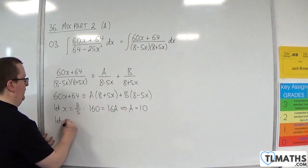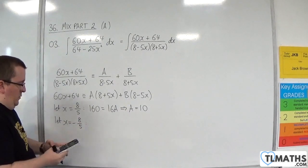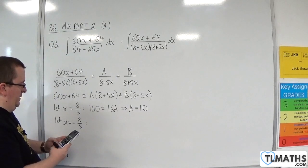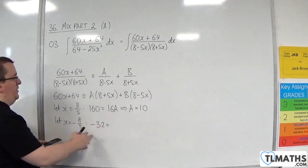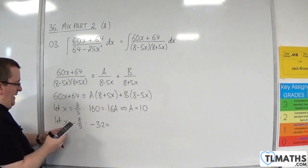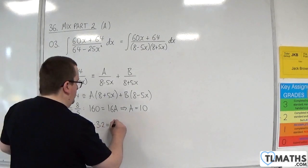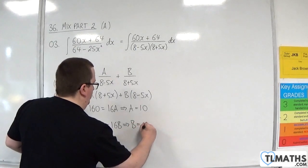And if we let x be minus 8 fifths, we have 60 times minus 8 fifths plus 64 on the left hand side, which is minus 32. On the right hand side, the minus 8 fifths will knock out that bracket. And we'll have 8 take away 5 lots of minus 8 fifths, which is 16. So 16B. And so B has got to be equal to minus 2.